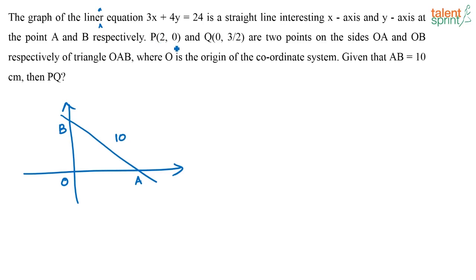Now P and Q are two points on side OA and OB respectively. So this has to be P and this has to be Q, and their coordinates are given. This is (2,0). This is (0, 3/2).